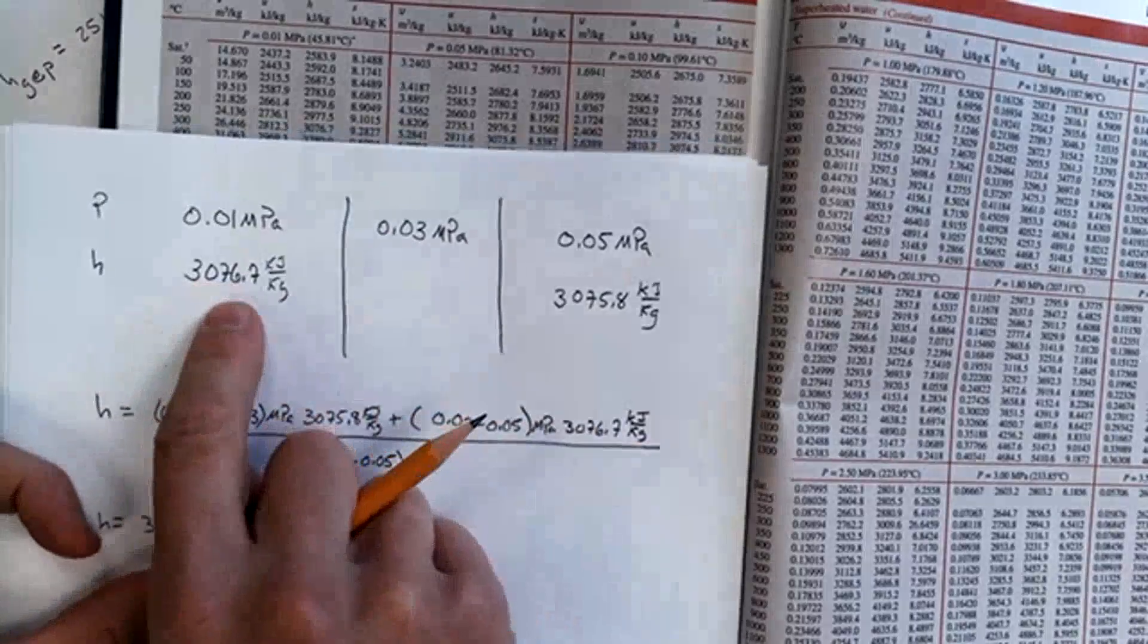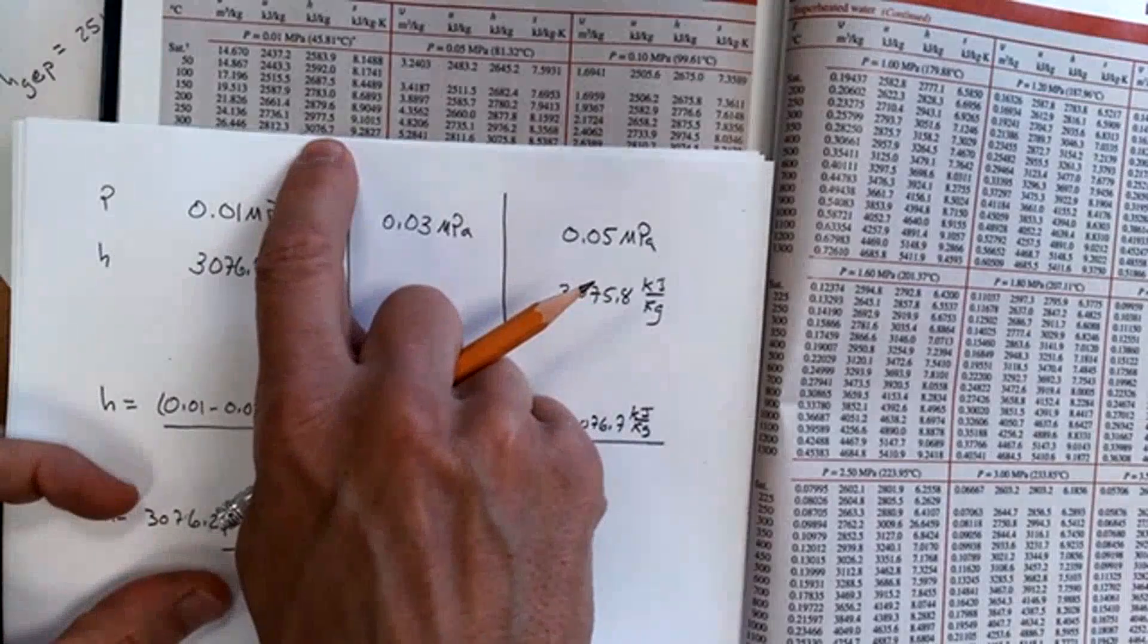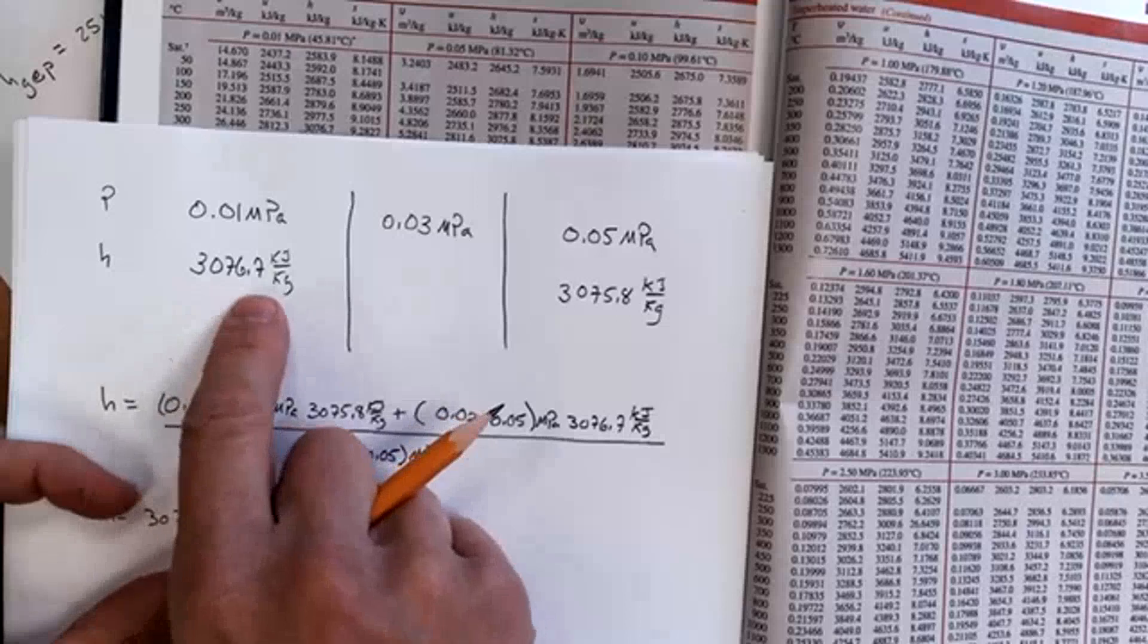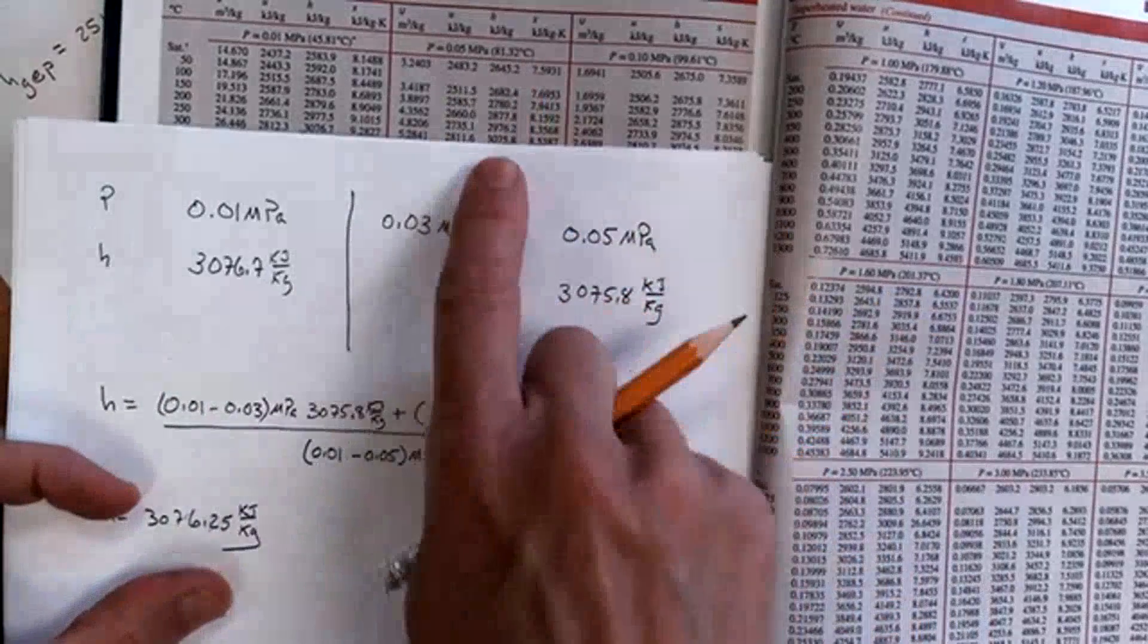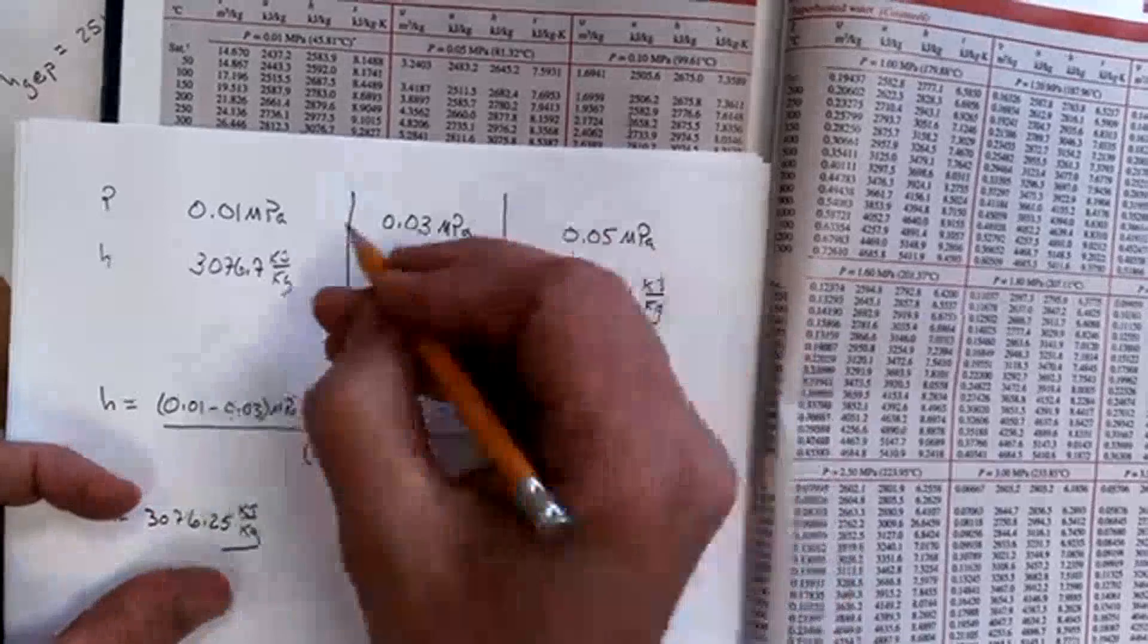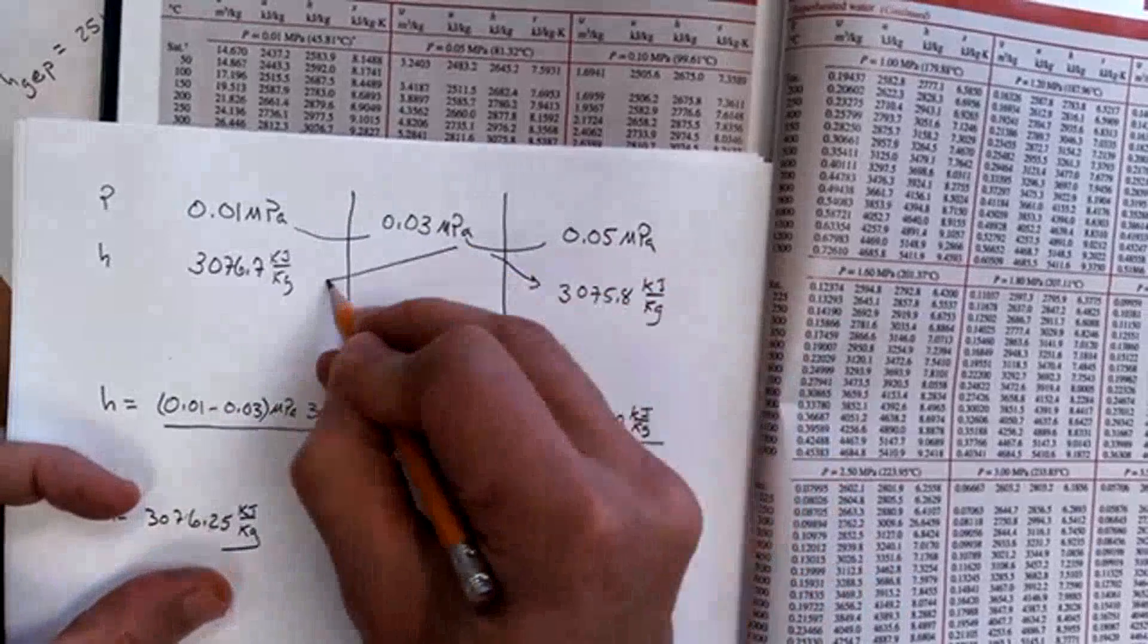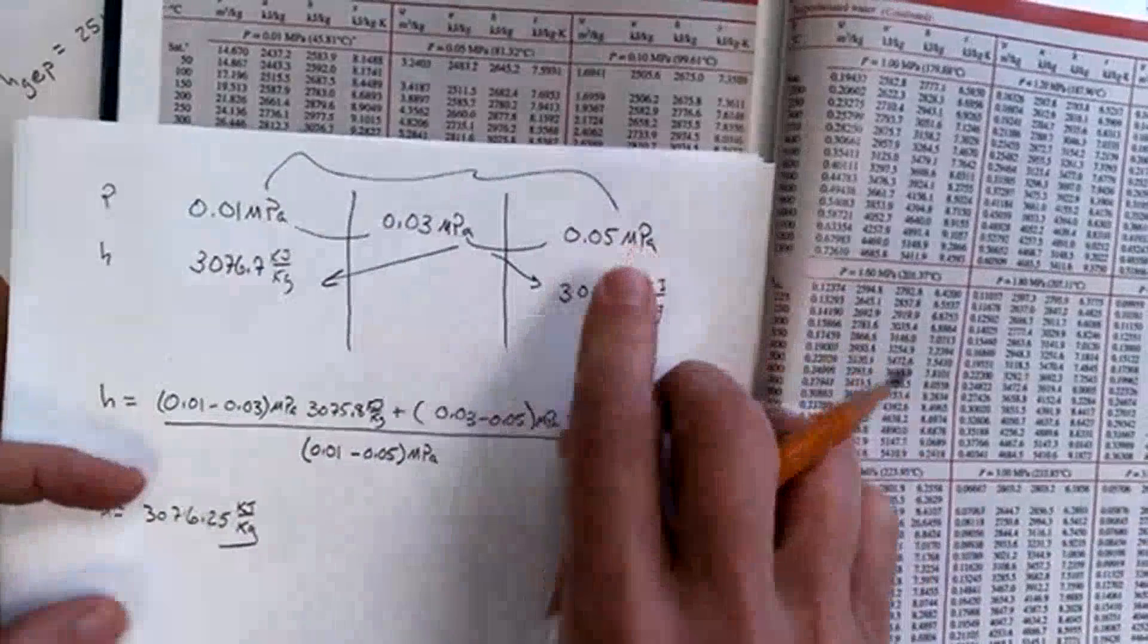So I wrote down the H value at 300 degrees and 0.01 megapascals, which is 3076.7, and at 0.05 megapascals, which is 3075.8. And then I use my pattern here: this minus this times that, this minus this times that, all divided by this total distance here.